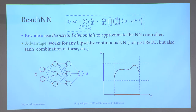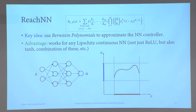Our idea is to use Bernstein polynomials to over-approximate the neural network controller. Our approach works with any Lipschitz continuous neural network — and most neural networks are Lipschitz continuous — meaning it applies to networks with ReLU activations, tanh activations, combinations of those, and more.